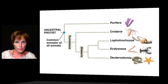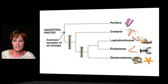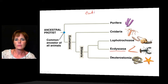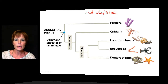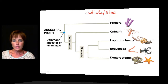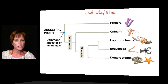The next clade of invertebrates is the Ecdysozoans, known for the process of molting. These organisms tend to have a cuticle that is shed at some point, and then a new cuticle regrows. This is the largest clade of invertebrate phyla, with eight total animal phyla — we'll discuss just two.